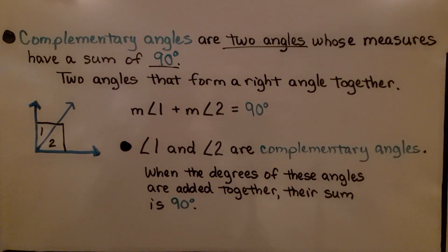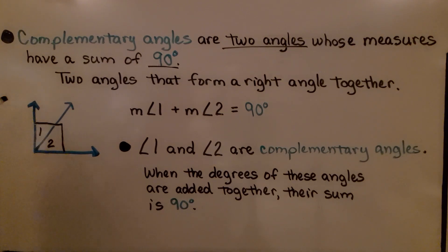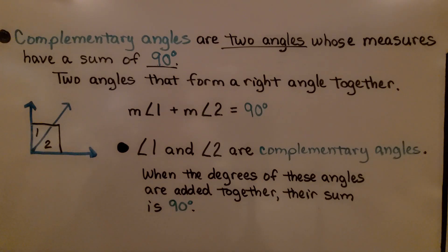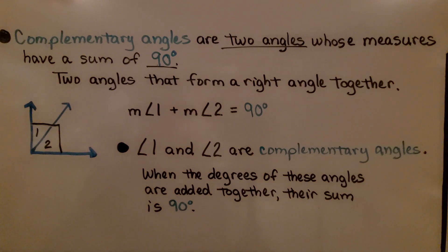Complementary angles are two angles whose measures have a sum of 90 degrees — they're two angles that form a right angle together. So the measure of angle 1 plus the measure of angle 2 equals 90 degrees. Angles 1 and 2 are complementary angles; when their degree measures are added together, their sum is 90 degrees.